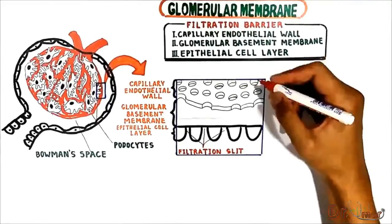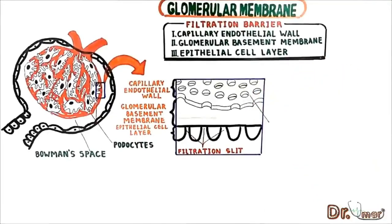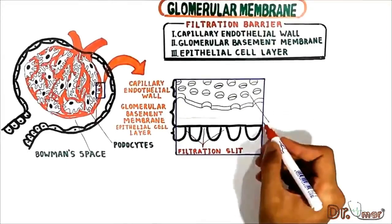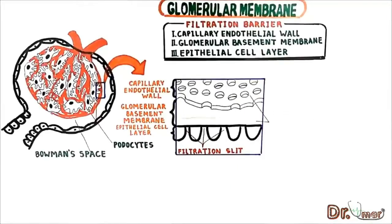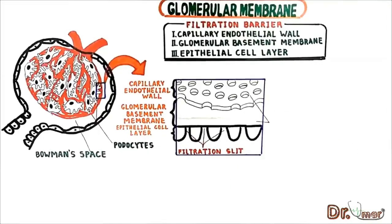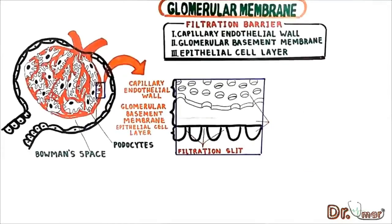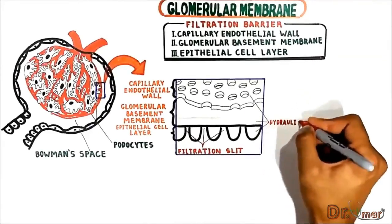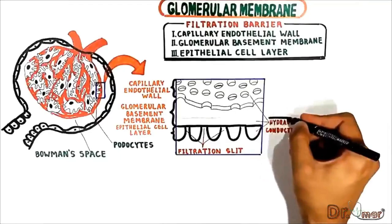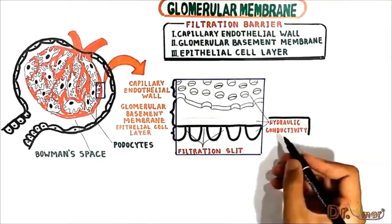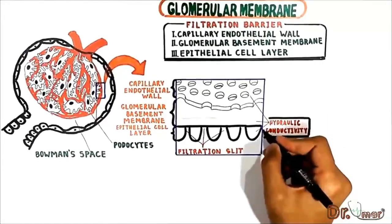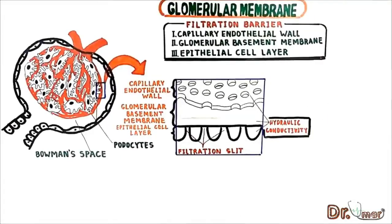The foot processes are separated by gaps called filtration slits through which the glomerular filtrate moves. The capillary wall with its fenestrated endothelium, the basement membrane with hydrated spaces, and the interdigitating foot processes of the podocytes, combined with an overall large surface area, create a high hydraulic conductivity — meaning it is permeable to water and dissolved solutes.